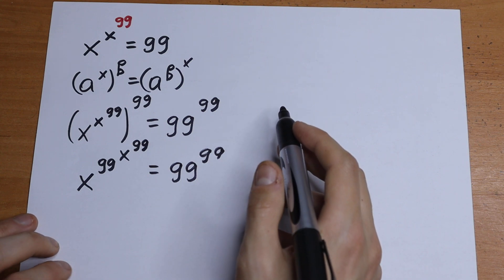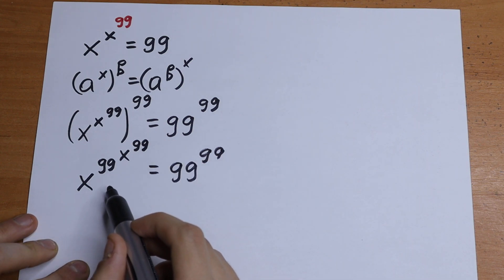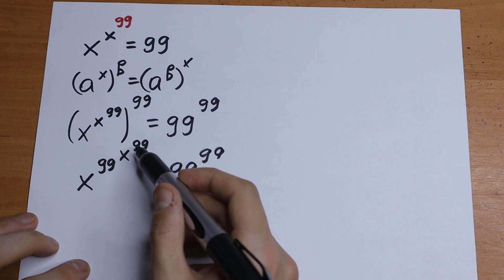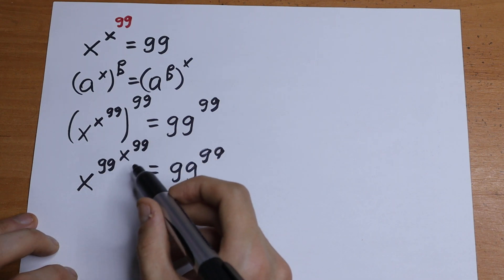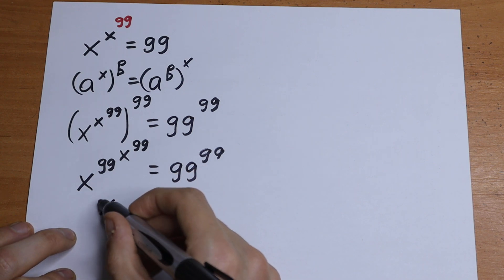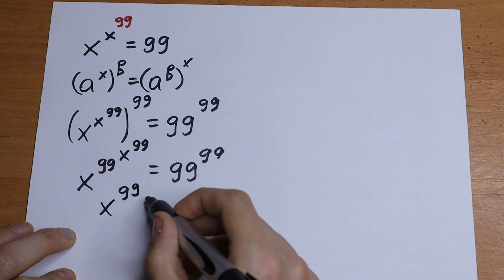What we are going to do next? We have same bases and same exponents on both sides. The only way this equation will have a root is when x to the 99th power equals 99.